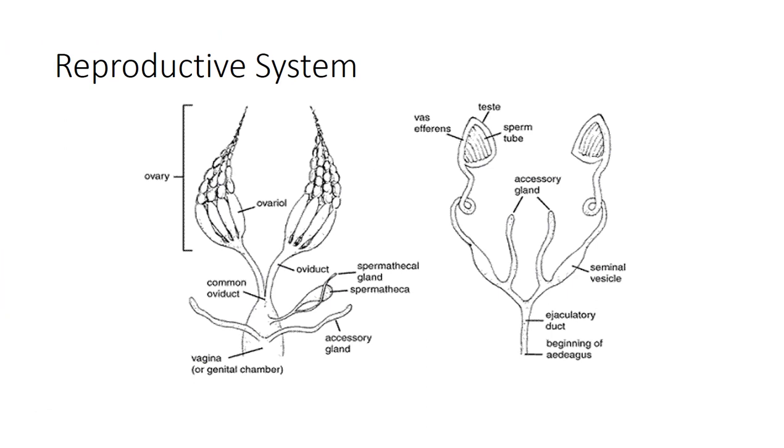So there you have it. The internal systems of an insect, in many ways, is different than a human, and you can see that they are not particularly complex. I hope you learned something about the internal systems of insects.